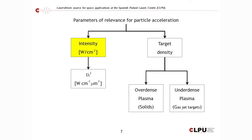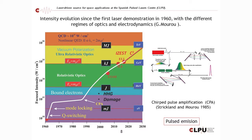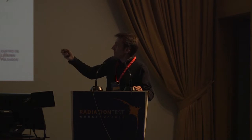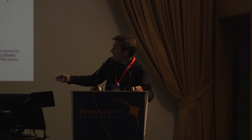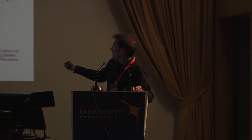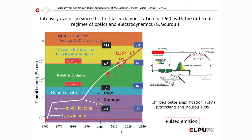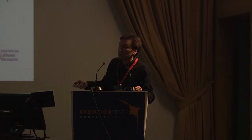Why are we capable now of accelerating particles? Because we have huge laser intensities — the state of the art is really high. The evolution started with what is called CPA — chirped pulse amplification — around 1985, which caused a huge rise in laser intensity. With this technology we are capable of getting, right now, something like 10^22 watts per square centimeter.